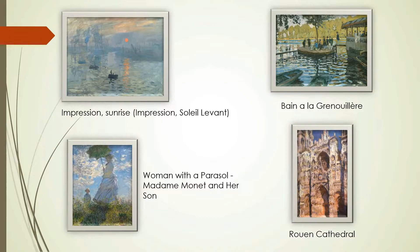The next painting is 'Bain à la Grenouillère,' painted in 1869, now placed in a French museum. Another is 'Woman with a Parasol — Madame Monet and Her Son.' The next painting is 'Rouen Cathedral.'